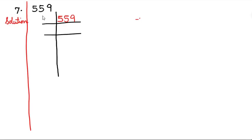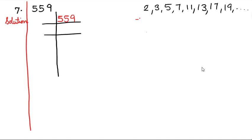Now let us solve sum number 7, that is 559. We will check what are the prime factors of this number. The list of prime numbers is: 2, 3, 5, 7, 11, 13, 17, 19 and so on. Now we will check whether this number is divisible by 2. No, because at units place we have 9, and 9 is not divisible by 2. In short, it is an odd number and odd numbers are not divisible by 2.